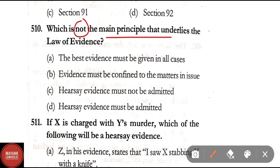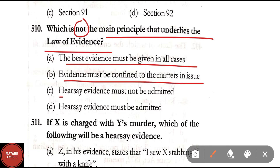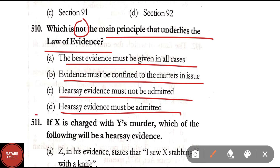Question 510: What is not the main principle that underlies the law of evidence? Option A: the best evidence must be given in all cases; Option B: evidence must be confined to the matters in issue; Option C: hearsay evidence must not be admitted; Option D: hearsay evidence must be admitted. The correct answer is Option D — hearsay evidence must be admitted is incorrect and is not a main principle underlying the law of evidence.